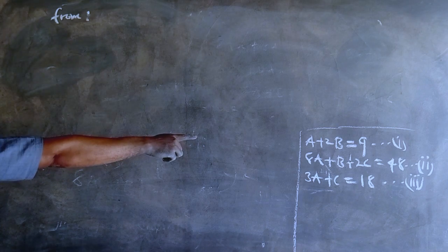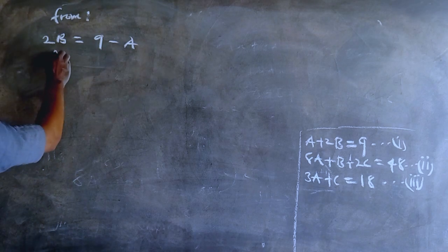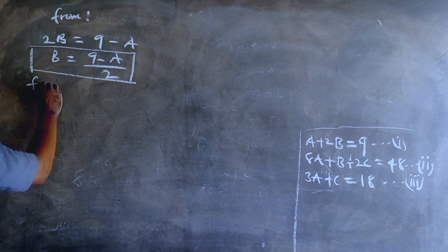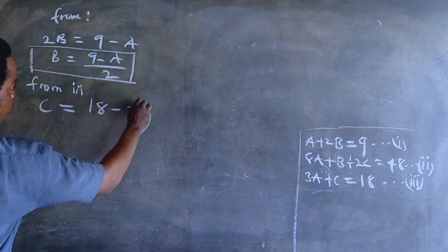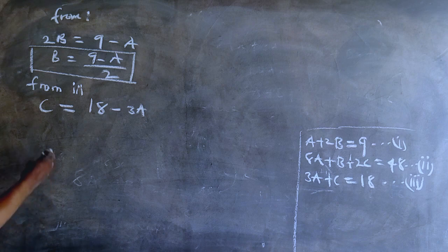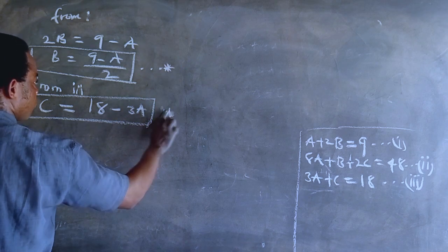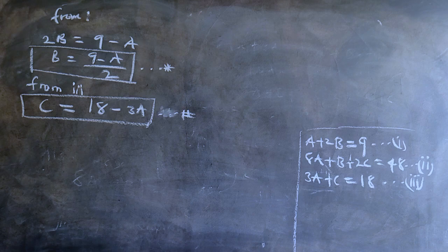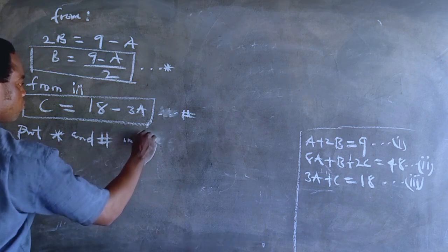Now from equation 1, please follow these steps when you have this kind of problem. From equation 1 we have 2b equals 9 minus a, so dividing both sides by 2 gives b equals 9 minus a all over 2. Now taking equation 3: 3a plus c equals 18, so the value of c is going to be 18 minus 3a. Please follow this process if you have to solve simultaneous equations having three unknown variables, because if you do not use all three equations you might run into a problem with your results.